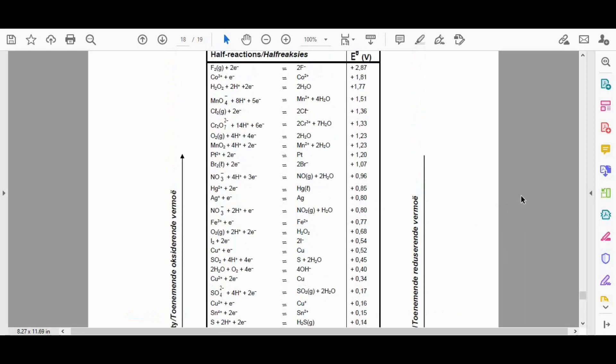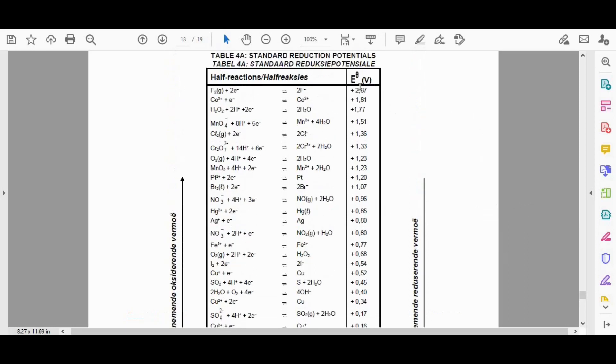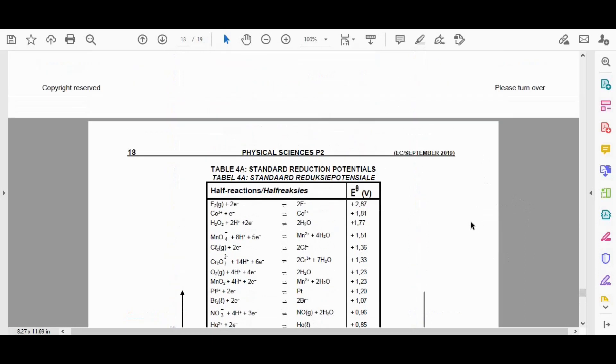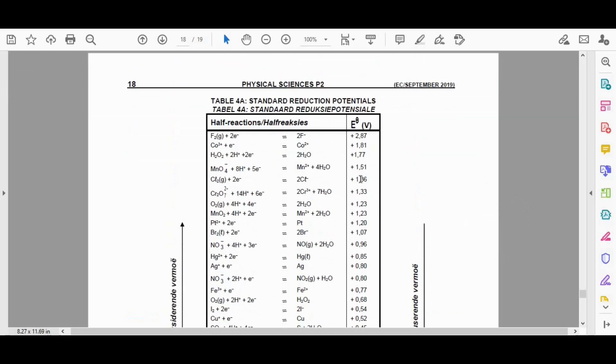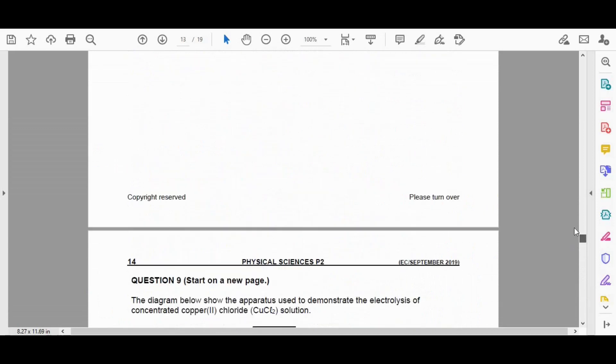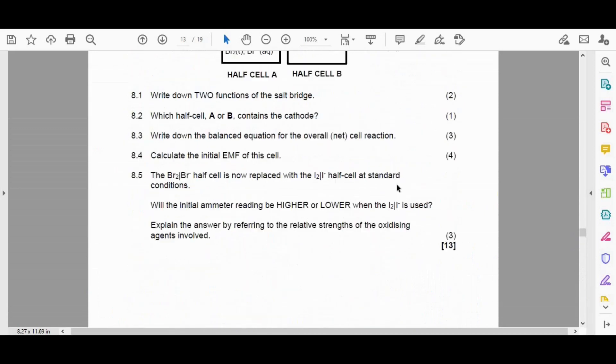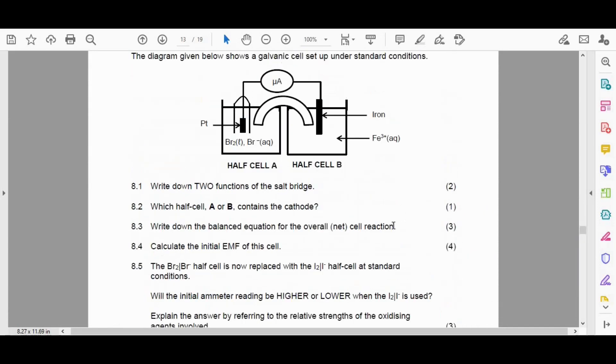Well, that means according to our values here, we've got a positive value and a negative value. So we know that a negative cell potential value here would determine the fact that that would be our anode, and a positive would mean our cathode.